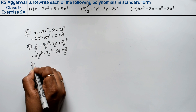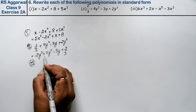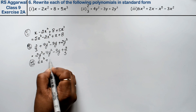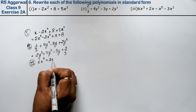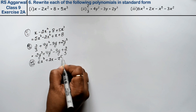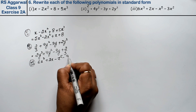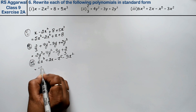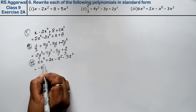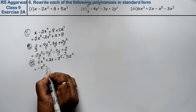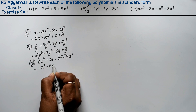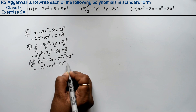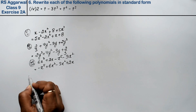Let's do the third part. Third part is: 6x cube plus 2x minus x power 5 minus 3x square. The answer starts with minus x power 5 as the highest degree term.